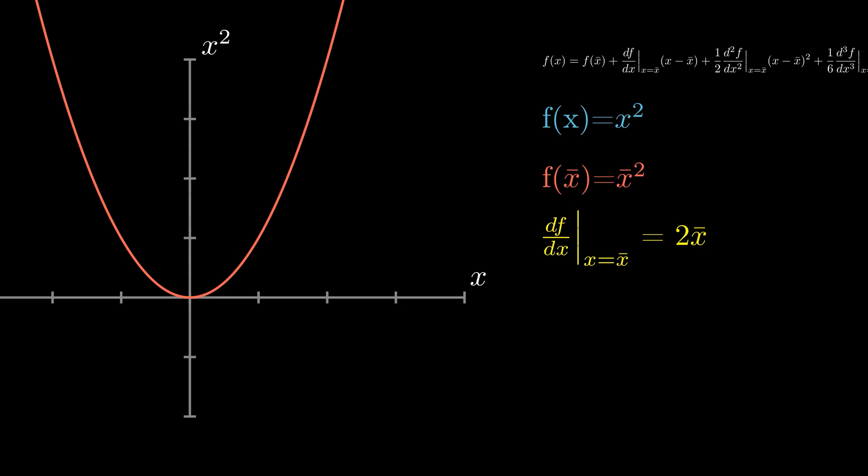Our next term will be our one half times the second derivative of f. So if the first derivative is 2x, well then the second derivative is just going to be 2 evaluated at x̄, won't make any difference, it's just going to be 2.